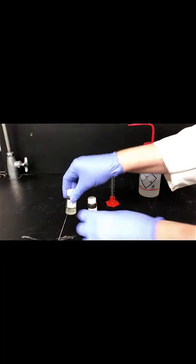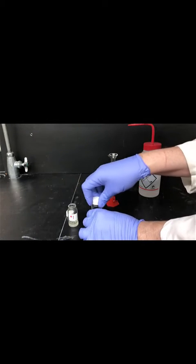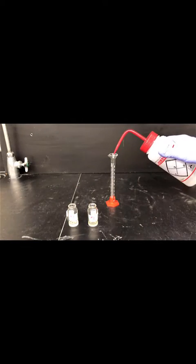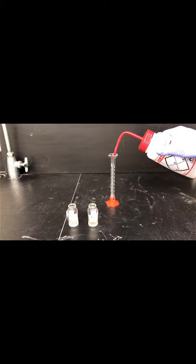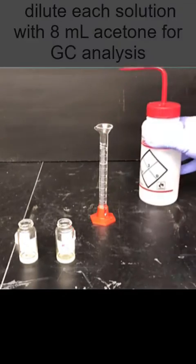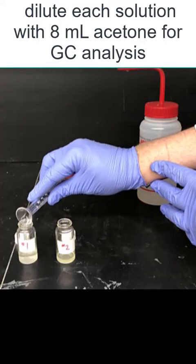In the next part of the experiment, we'll be analyzing these reaction solutions by gas chromatography, or GC for short. Reaction solutions are far too concentrated to inject directly into the GC, so we'll need to dilute them with acetone. If we don't, the signals will be off scale and have flat tops in the GC chromatogram, which isn't helpful for figuring out integrations. Add 8 milliliters of acetone to each one of the reaction solutions and swirl.